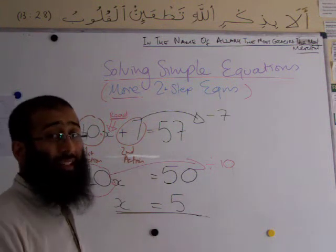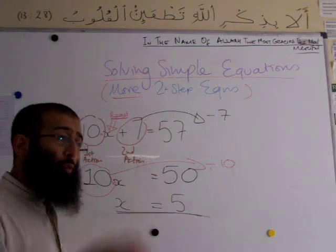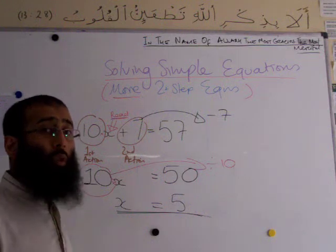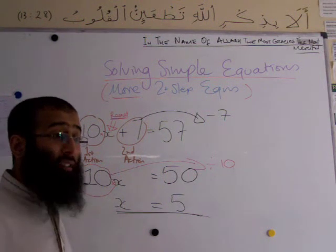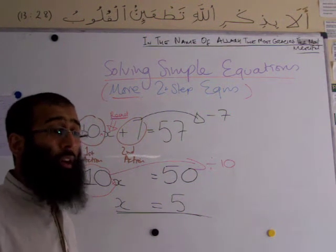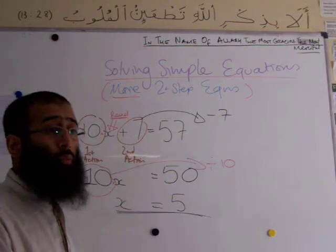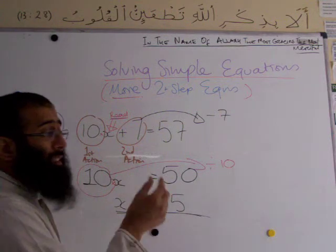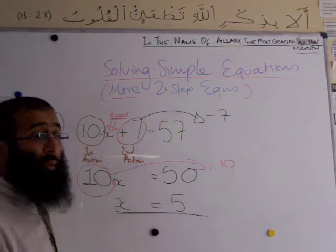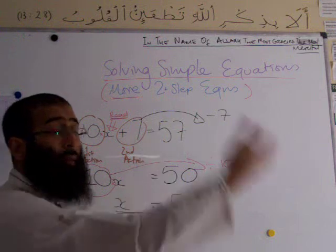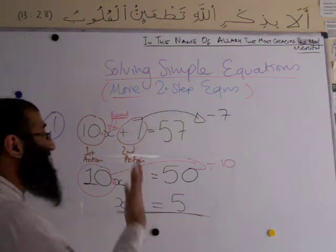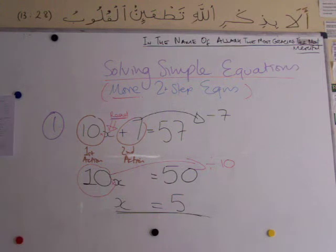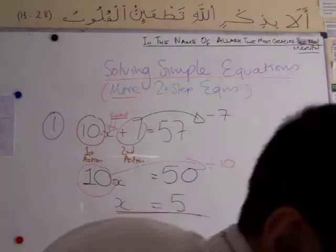A two-step question is not a harder question — it is a longer question. It's like having two slices of toast for breakfast instead of one. Two toast isn't harder to eat, it just takes longer. This question has two parts built into one. We identified what was done first and second, then moved them in the right order. That's the end of the first question.